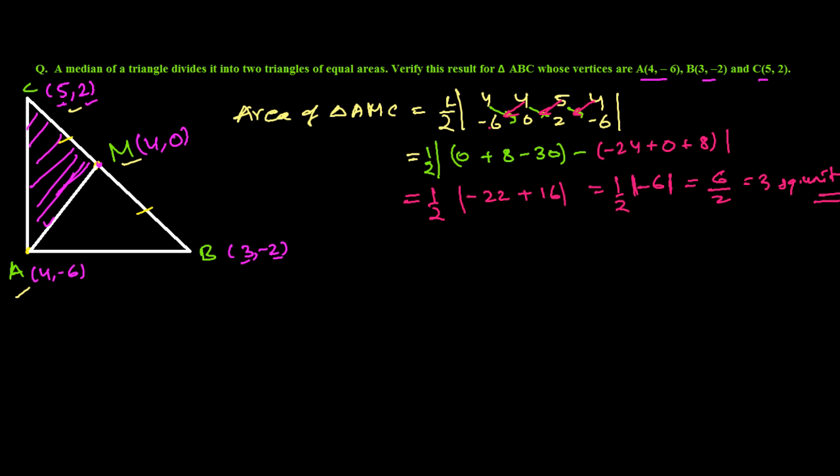Now let's find out the area of triangle AMB. So area of triangle AMB is equal to, now again 1/2. Let me write the first one: (4, -6), and then second one is (3, -2), and the third one is (4, 0), and we need to repeat the first coordinate one more time: (4, -6).